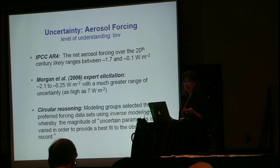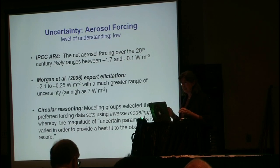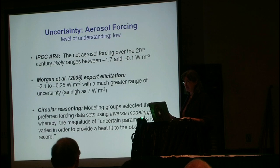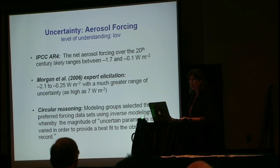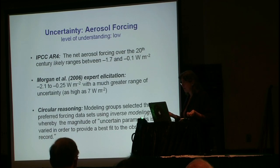This relates to the question Steve Schwartz asked about the forcing data. With all these different sensitivities and using different forcing data, how do the models all agree with the observations? Well, there's an element of inverse modeling — a lot of these models were tuned to the 20th century observations. They had the option of selecting which solar forcing data or which aerosol data they wanted to choose. The detailed documentation of how they calibrated and why they selected certain forcing datasets simply isn't out there in most cases. So there's an element of circular reasoning here.